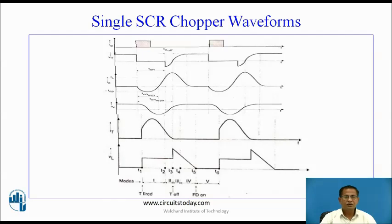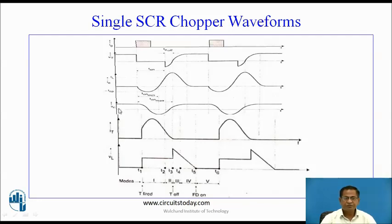These are the waveforms for the single SCR chopper circuit: waveforms for gate current, waveforms for voltage across the thyristor, waveforms for charging and discharging current, and waveforms for load voltage.